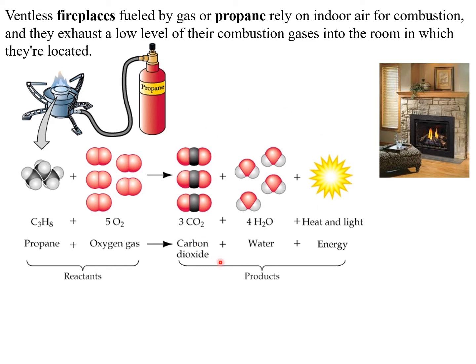Then we have the products, which are three in this case: carbon dioxide CO₂, water, and also heat and light. Although heat and light are not matter but energy, they can be considered products. There are situations like cooking where we need to provide heat for the reaction to happen, in which case heat would be a reactant. The reactants and products are separated by an arrow, which tells you the direction in which the reaction is going to happen.